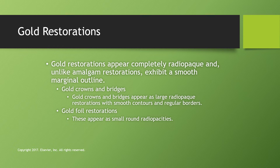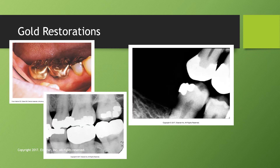Gold restorations appear completely radiopaque but unlike amalgam they usually have a smooth marginal outline. Gold crowns and bridges have large radiopaque restorations with smooth contours and regular borders. Gold was a great restorative material because it is a softer, more malleable metal compatible with the oral cavity — but it is expensive. It is almost impossible to tell the difference between a gold restoration and an amalgam restoration from x-ray alone; you must look inside the patient's mouth.